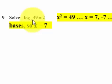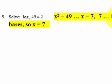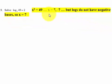Here's a real one. So the base is x. So x raised to the two has to equal 49. You take the square root of both sides, you're going to get positive seven, negative seven. But remember, logs don't have negative bases, so x has to equal seven here.